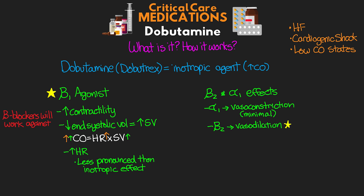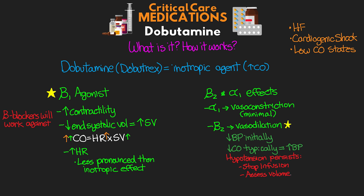You want to be on the lookout for potential decreases in your patient's blood pressure initially. If your patient has low cardiac output, we'll often see this negated by the increase in contractility, and in fact we can see improvements in their blood pressure as a result of that increased cardiac output. If hypotension does present and persist, you want to stop the infusion and address their volume status. This vasodilation can help to decrease filling pressure as well as afterload, making it easier for the heart to contract, again increasing stroke volume and thus cardiac output.